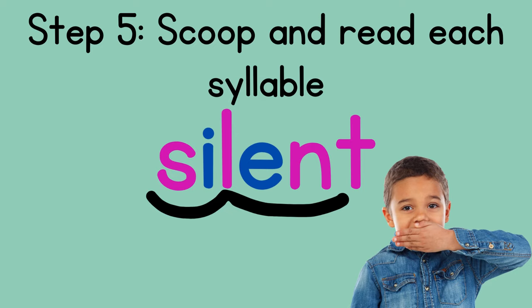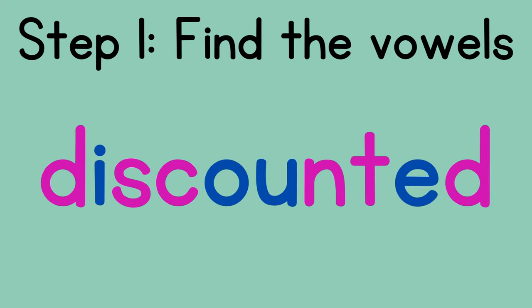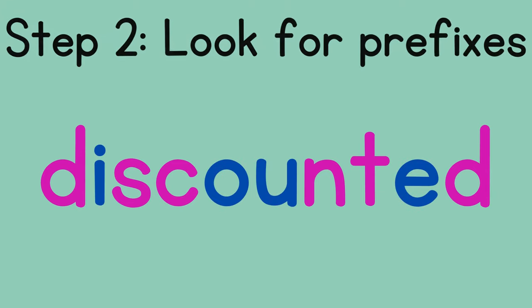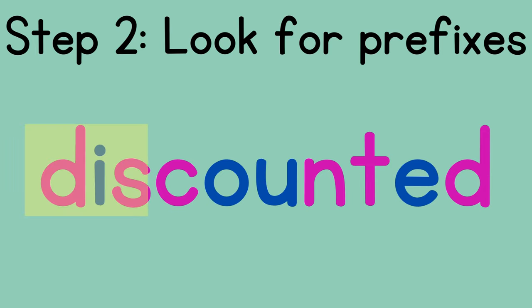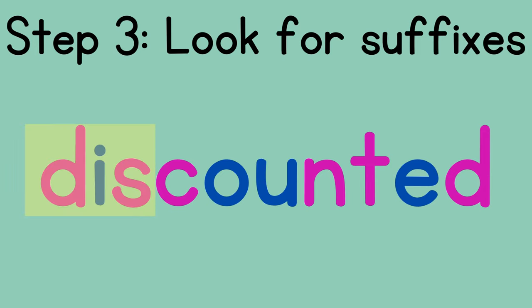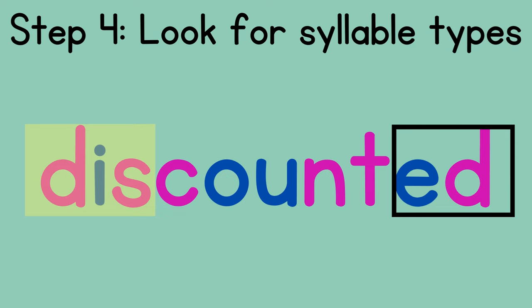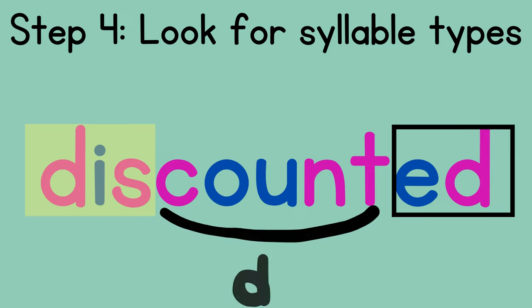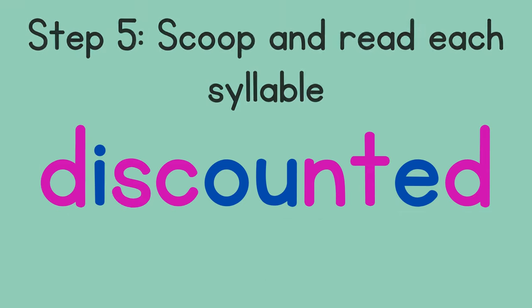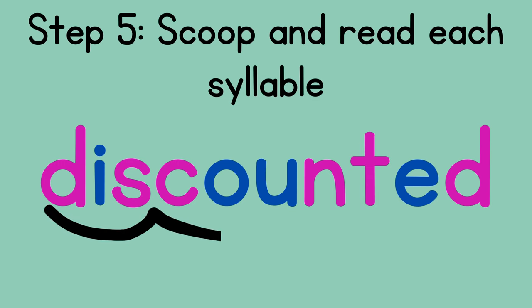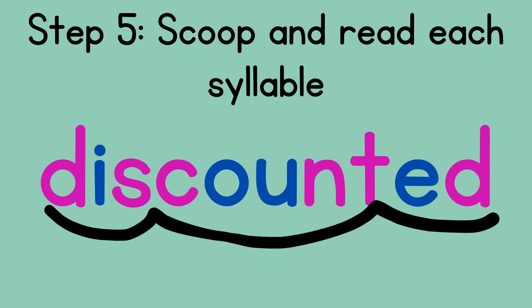Let's try a longer one. First, find the vowels. Then look for prefixes — this word has the prefix 'dis.' Third, look for suffixes — I see a suffix: 'ed.' Fourth, look for syllable types. The base word in the middle is the only syllable left, so we don't have to divide it. It has a vowel team with O and U together, so it's a vowel team syllable. Now let's scoop and read: dis-count-ed — discounted.